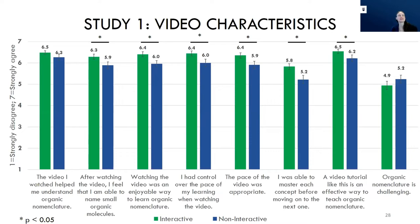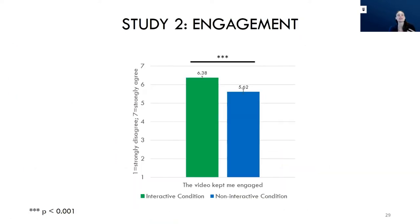We had students randomly assigned to watch either an interactive video or the identical but non-interactive version as a worked example. In green are students who watched the interactive version; in blue, non-interactive. Where you see a star, there were statistically significant differences — and students had no idea a different version of the video existed. Students who watched the interactive video felt significantly more able to answer questions, found it more enjoyable, felt they had better control over the pace, thought the pace was more appropriate, better felt they were able to master concepts before moving on, and thought it was a more effective method.